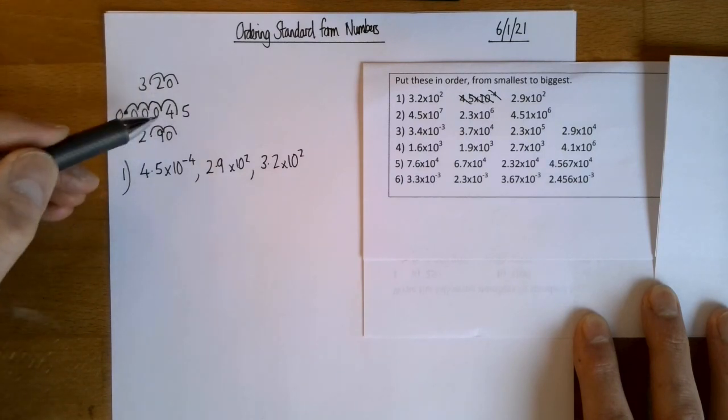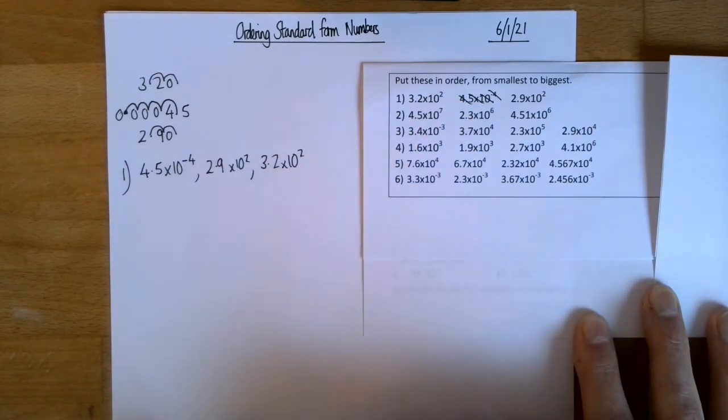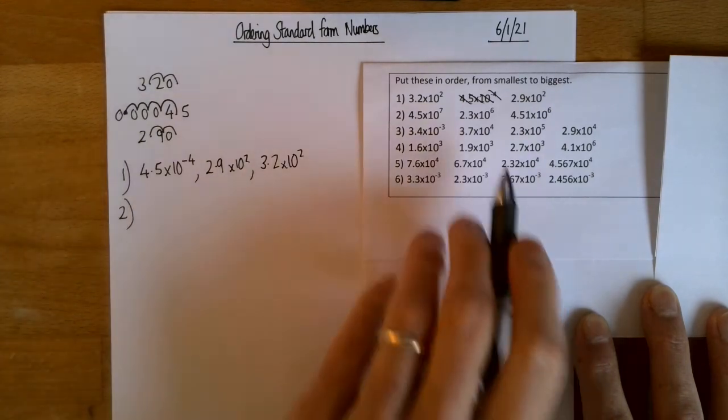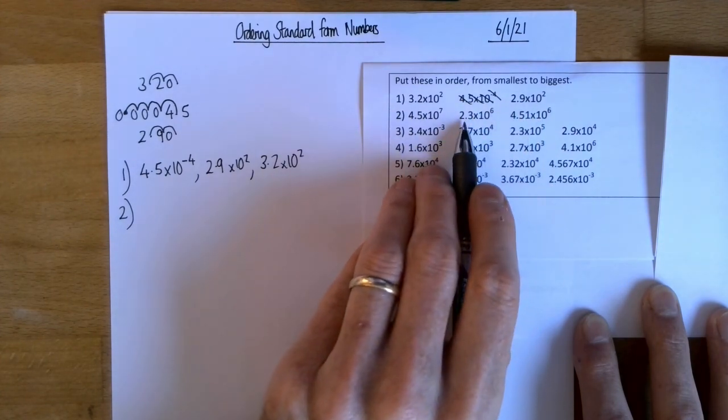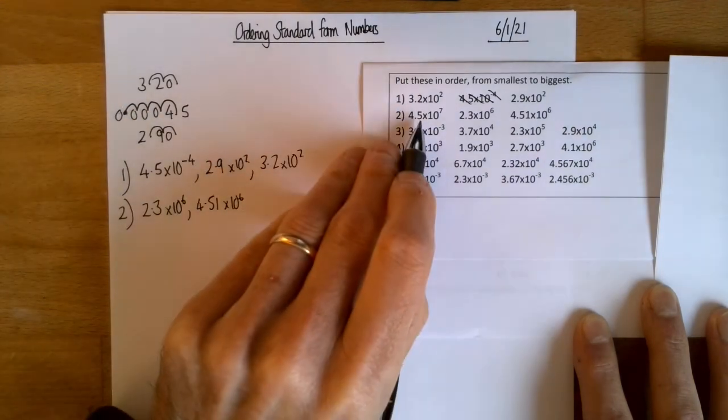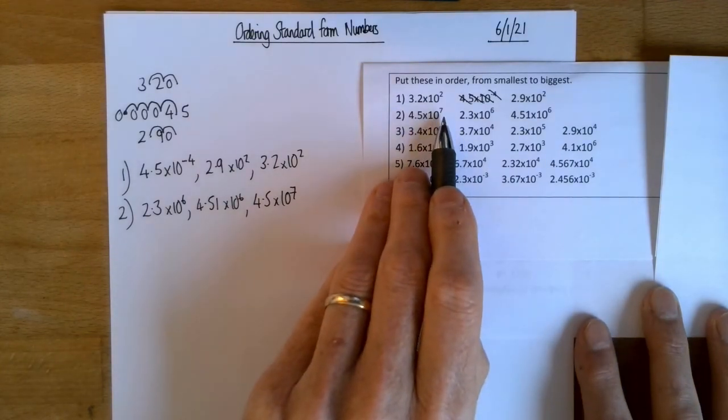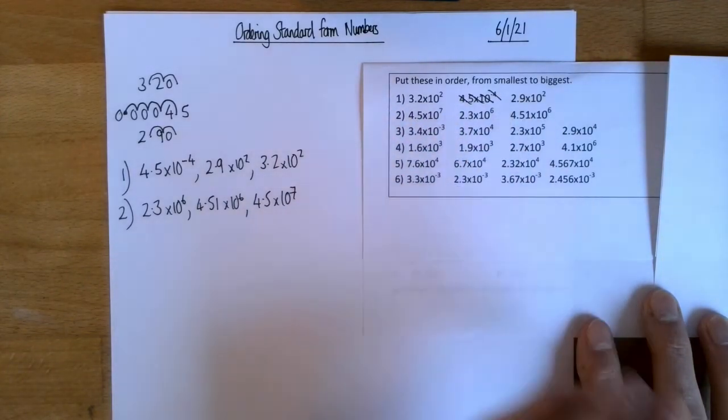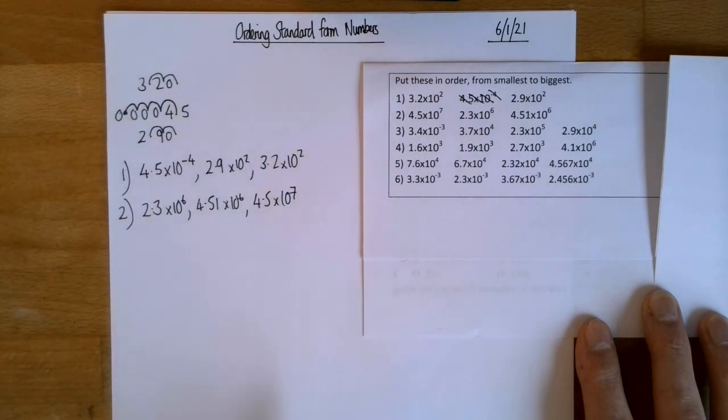Now, if you decided to go back to ordinary numbers, it's quite important that when you wrote your answer out, you didn't write 0.00045, you wrote the numbers as they were presented to you in the question. So question two, smallest to biggest. So 10 to the power of 6 is going to be the smallest, but I've got two 10 to the power of 6 numbers. So I then need to look at the number between 1 and 10. So that one's clearly the smallest, isn't it? That's 2.3 times 10 to the 6, followed by 4.51 times 10 to the 6. And then I've got the one 10 to the power of 7 number, which is always going to be bigger. So I'm comparing these numbers by looking at the power of 10 first and then looking at these numbers here. So you want to have a go at 3, 4, 5 and 6. And this time I'm going to pause the video and then I'm going to show you the answers. So please don't just let the video run. Pause it at this point and have a go yourself.